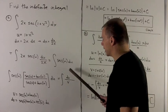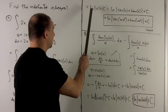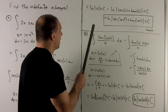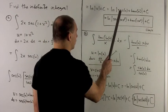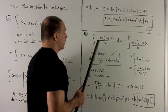We know how to do this. The antiderivative of that is just natural log of absolute value of v plus a constant. I put back in for v. I get natural log of absolute value of sec(u) + tan(u) plus a constant.